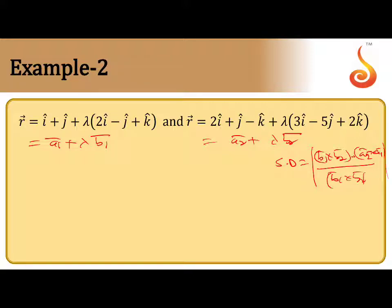We need ā₁, b̄₁, ā₂, b̄₂. What is ā₁? ā₁ = î + ĵ. b̄₁ is 2î - ĵ + k̂.